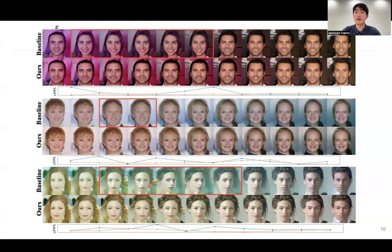These are some additional traversing examples. And we also show LPIPS score between two adjacent frames, explicitly showing the decrease of path length.